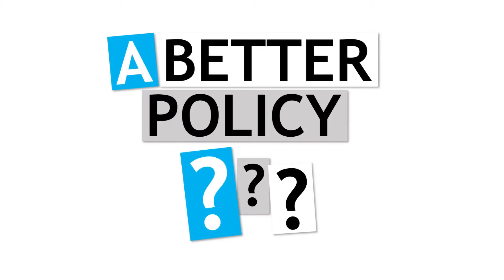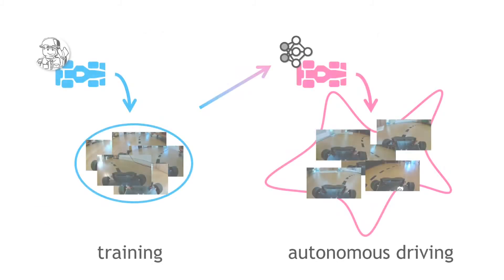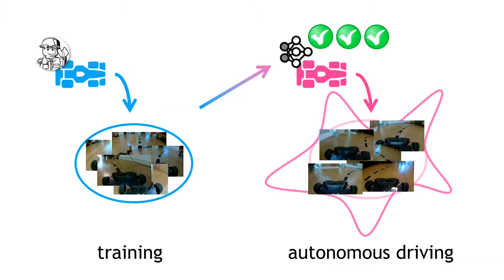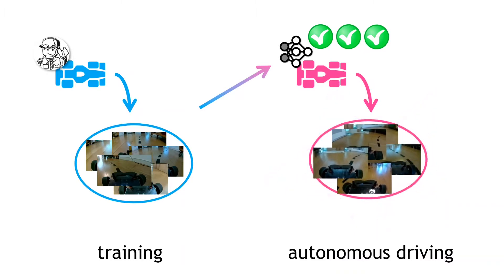Firstly, we can try and train a better policy model. We can try and develop a more accurate model, train with more data, and get a model that generalizes better. If we can bring down the prediction errors of the policy, then the autonomous driver will experience conditions much closer to what was in the training data, and things should work okay.